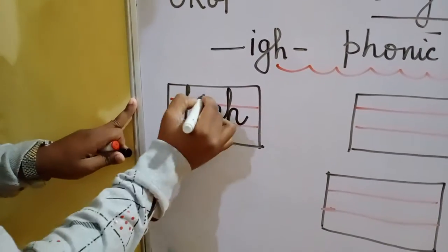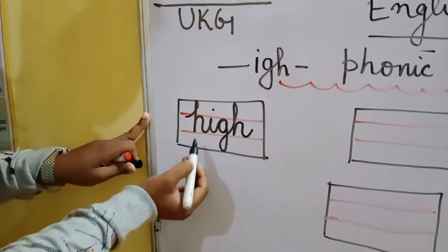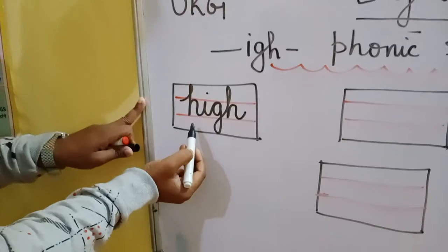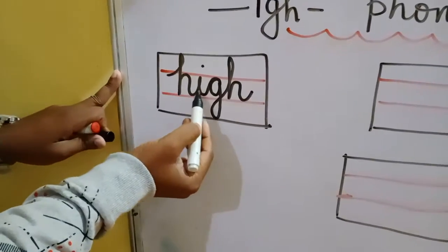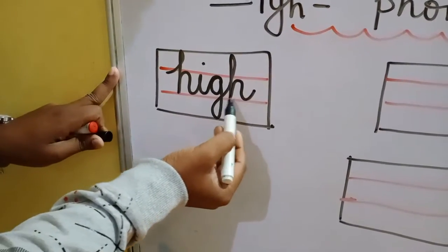Sundar se is tarah likhte hain — cursive writing mein: H, I, G, H.